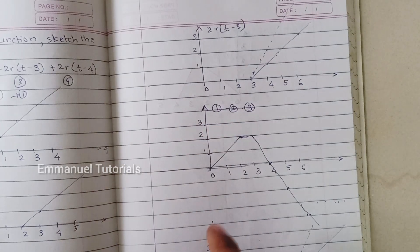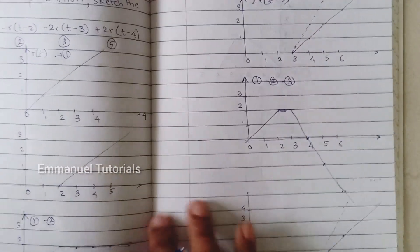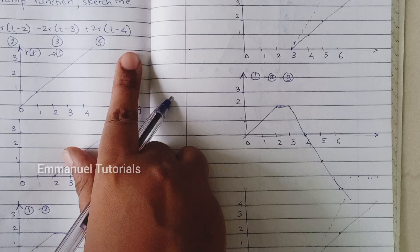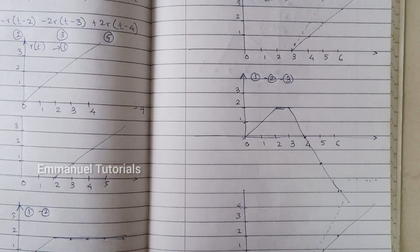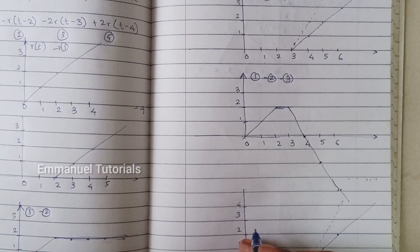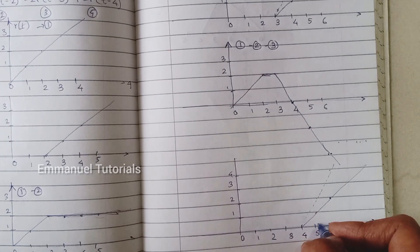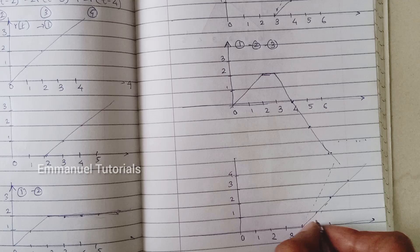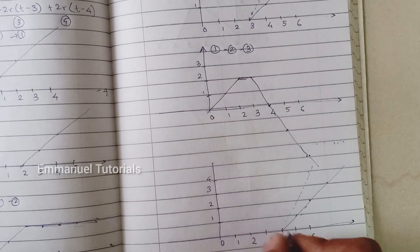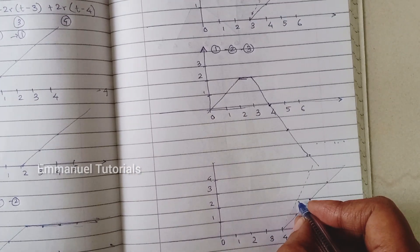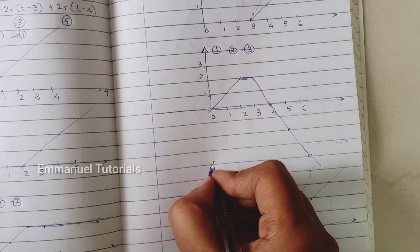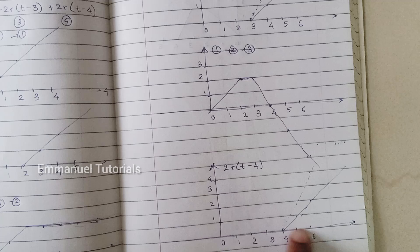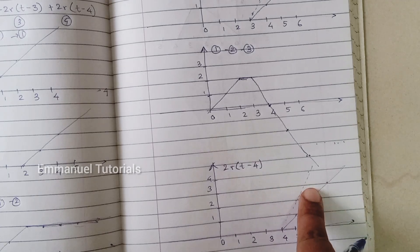The last part, part 4, is again a delayed and scaled version of the ramp signal — 2R(t−4), delayed by 4 and multiplied by 2. Starting from T=4 with amplitude scaling by 2, this dotted signal is what we need to add to our current resultant.